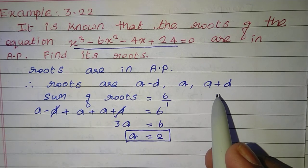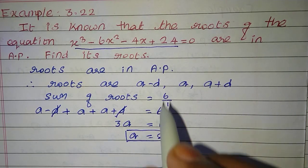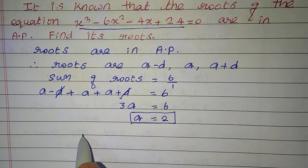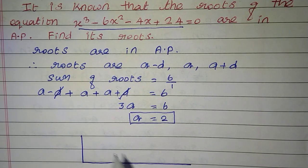Because a minus d, a, a plus d, and a value is 2. So one root is 2. Now we can find the remaining roots.